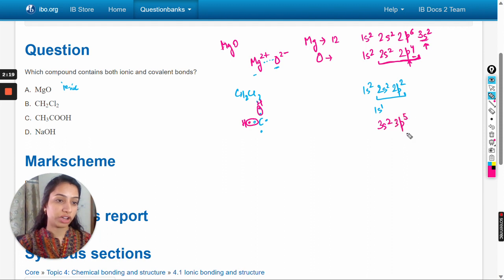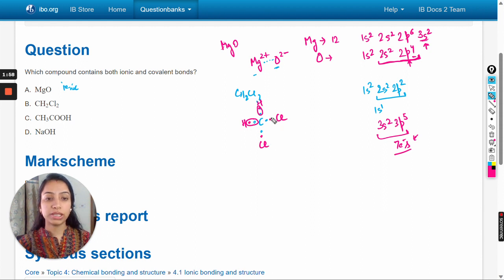So there are seven electrons in the valence shell of chlorine. If it gains one electron, its octet will be complete. Both chlorine atoms will share one electron with the carbon, so two single bonds with two chlorine atoms. All are covalent bonds, so here covalent bonding is involved.